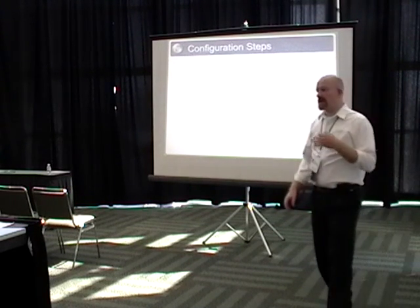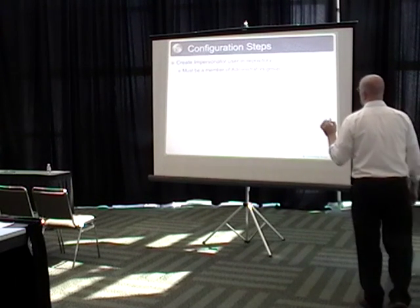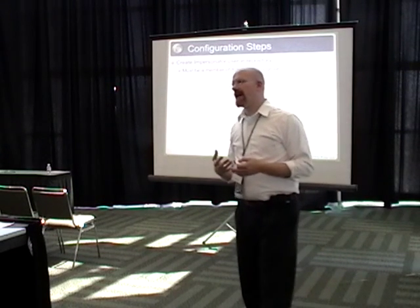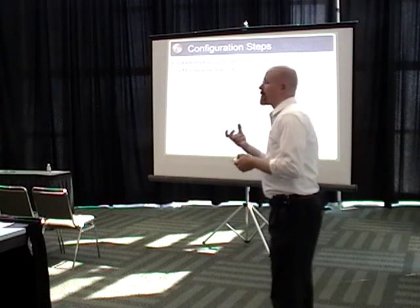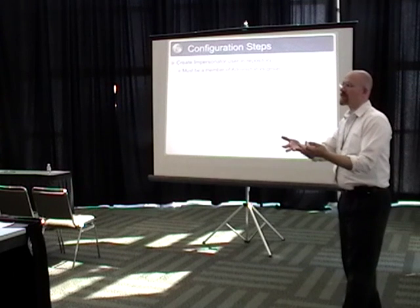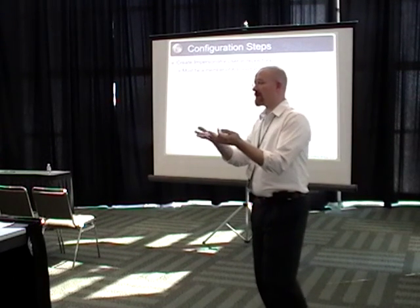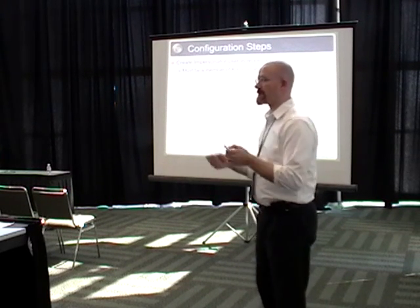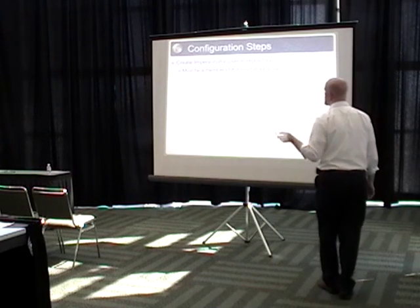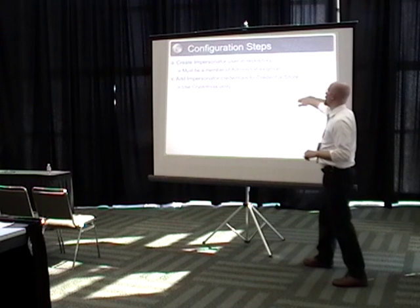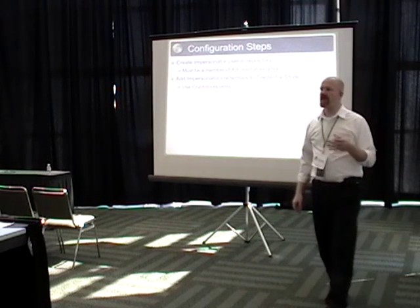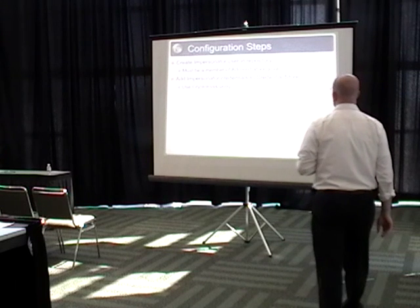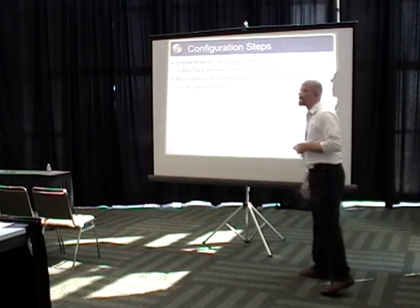The configuration steps are pretty straightforward. In the metadata repository, OBIE uses something called an impersonator user. This user is the representative for all users in the system. When your third-party tool passes off to OBIE, it's passing to this impersonator user, who then figures out who it needs to be from the credentials passed to it. This impersonator user needs to be in the repository, and then there's a file at the server level called the credential store, which holds all encrypted passwords. That information about the impersonator user needs to be entered into the credential store using a utility called cryptotools.